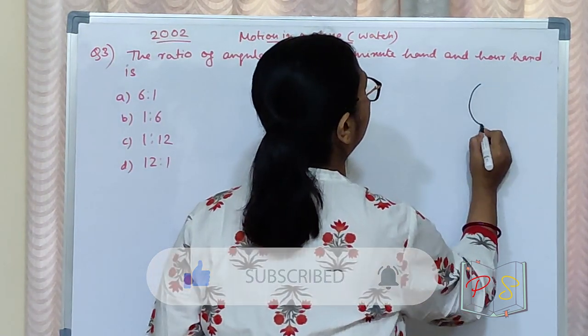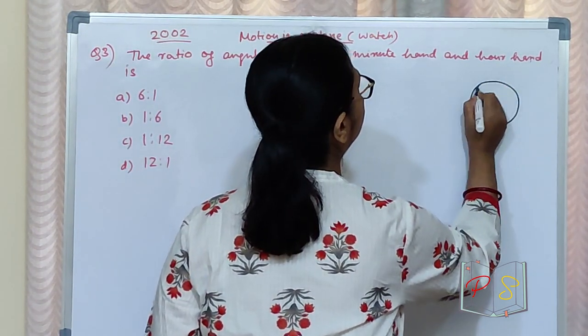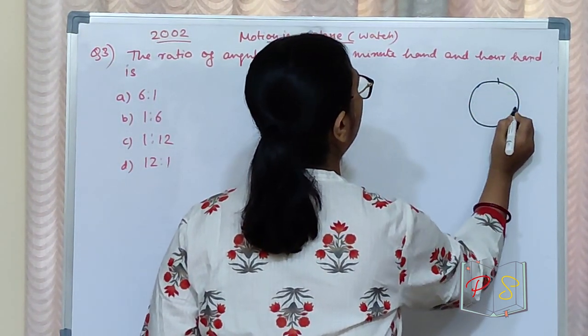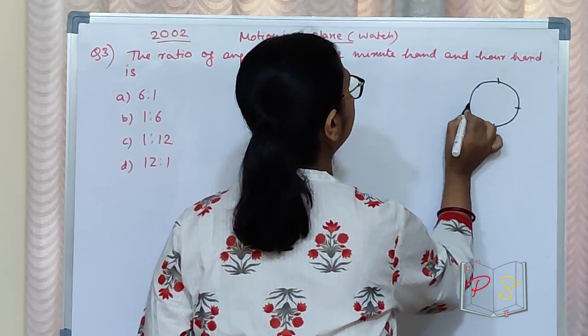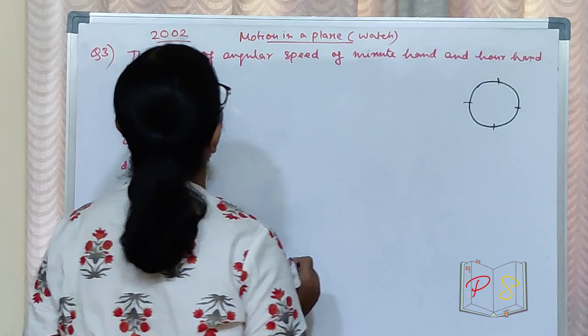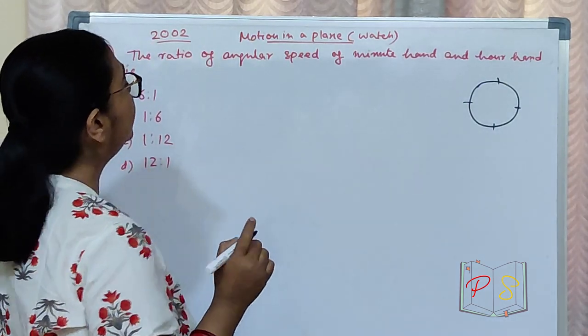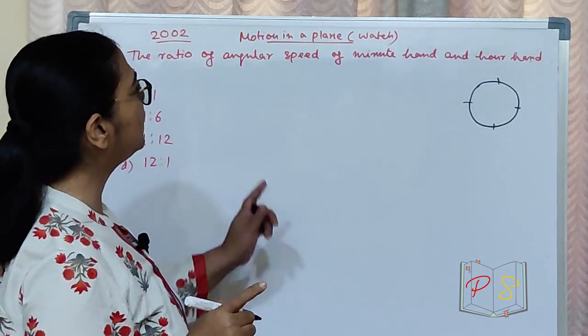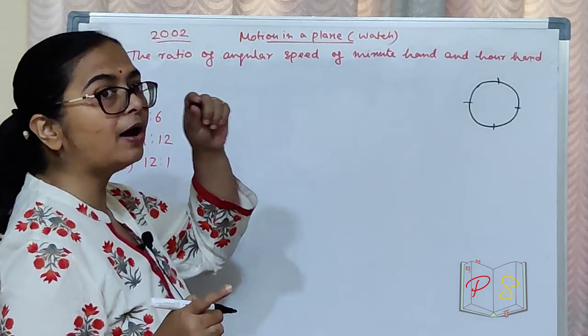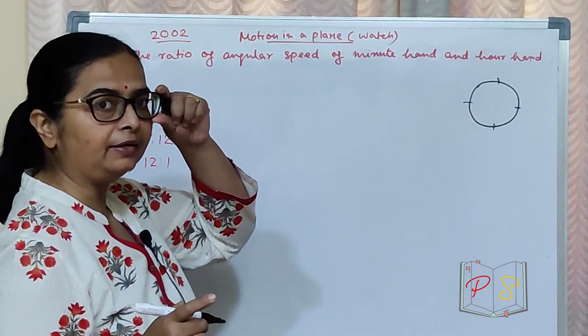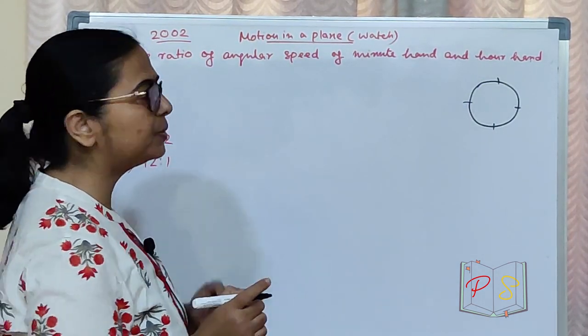Let me draw a clock. 12, 3, 6, 9. Ratio of angular speed of minute hand and hour hand — ratio of speed.